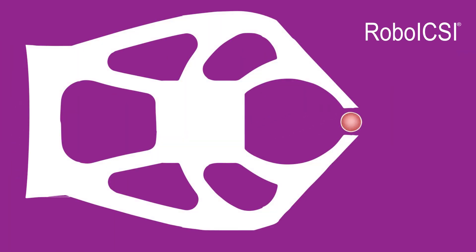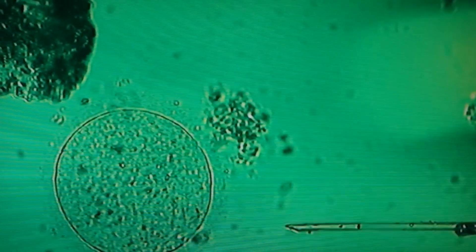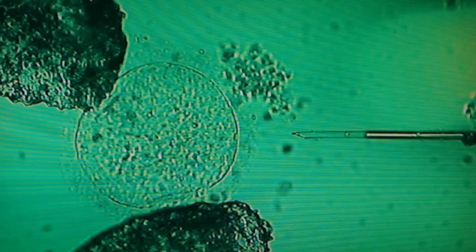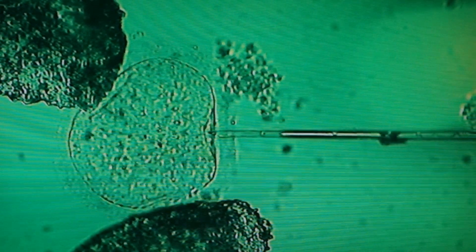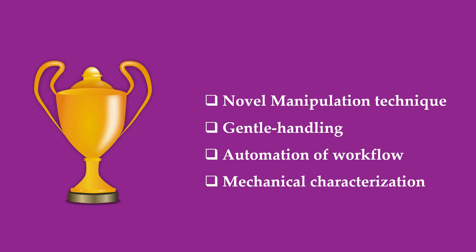Robo-ICSI does the same to the oocyte. Robo-ICSI offers a novel way of immobilizing an oocyte. It has finger-like features to grip the oocyte and hold it in place while sperm is injected into it. It is a patent-pending technology that offers many features for the first time.